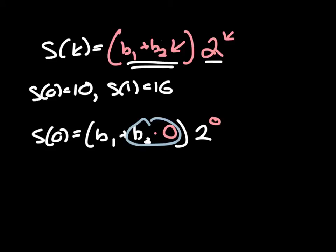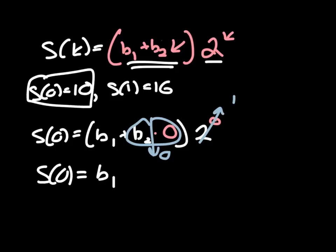b₂ times 0, of course, is just going to be 0, and 2^0 is just equal to 1. And so what this is going to tell me is that S(0) is just equal to b₁, but S(0) is also equal to 10. And so what this is telling me is simply that b₁ is equal to 10. So I found one of my b's.